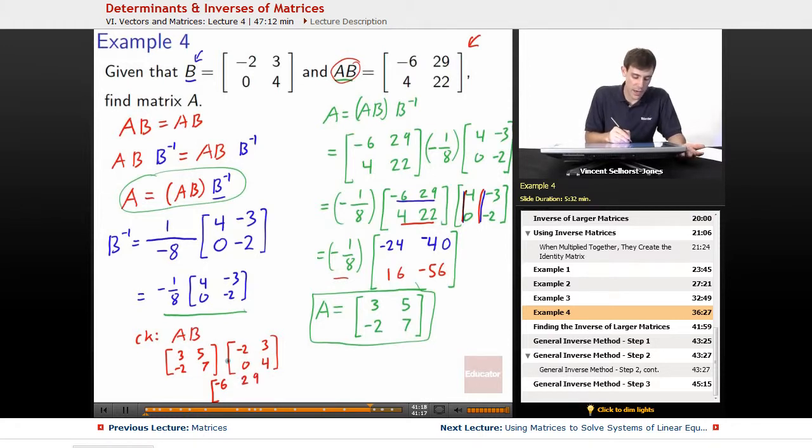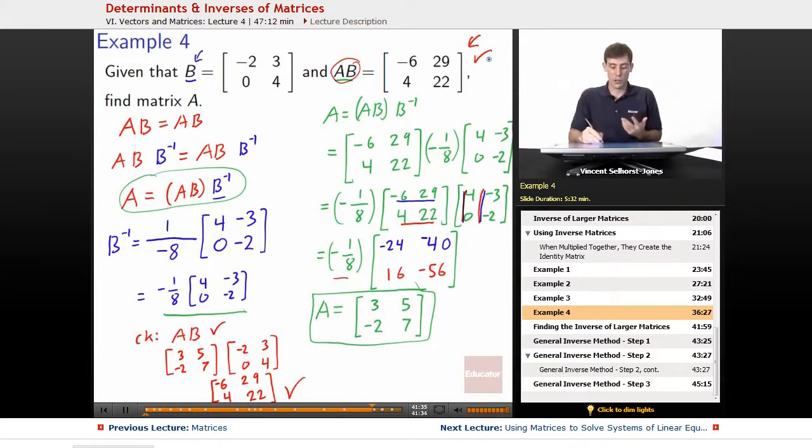Negative 2, 7 on negative 2, 0 is going to get us negative 2 times negative 2, positive 4. And negative 2, 7 on 3, 4, negative 2 times 3 gets us negative 6, 7 times 4 gets us 28. Add those together, you get 22. And so that is exactly the AB that we started with, so it checks out, our answer is good.